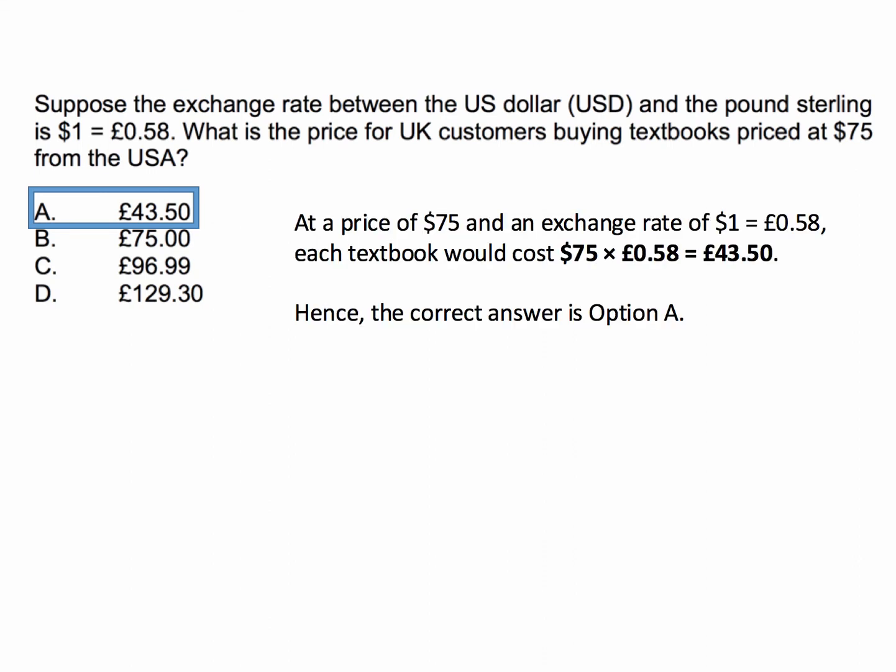At a price of $75 and an exchange rate of one dollar buys 58p, that means one pound buys more than a dollar, so you'd expect the price to be lower than $75 in sterling terms. Each textbook will cost $75 multiplied by 0.58, because you're giving up 58 pence to get a dollar in exchange. 75 times 0.58 equals £43.50 — hence the correct option is A.